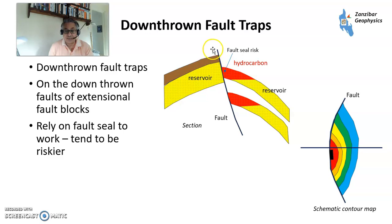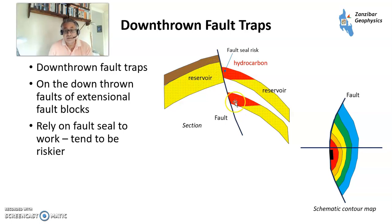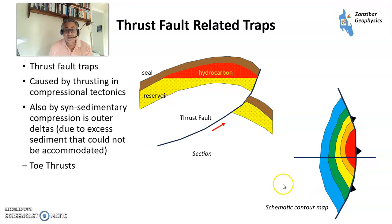The next trap type is the downthrown fault side. You have a similar scenario with a fault, but now you're looking at the downthrown side. The key risk here is the fault seal, because you're entirely dependent on that fault seal to work — unlike the upthrown side trap. If the fault seal fails, hydrocarbons leak upwards and the trap doesn't work. They're a lot riskier, though they do sometimes work.